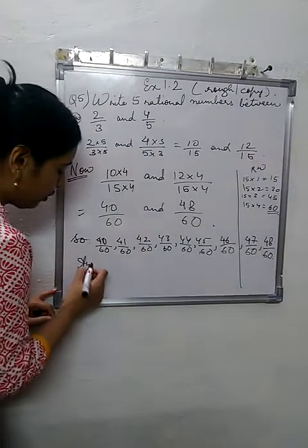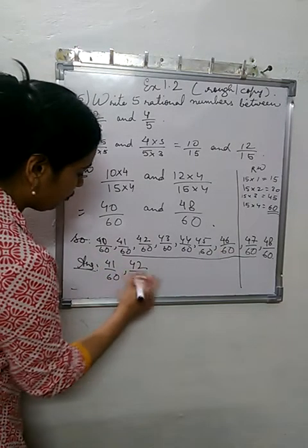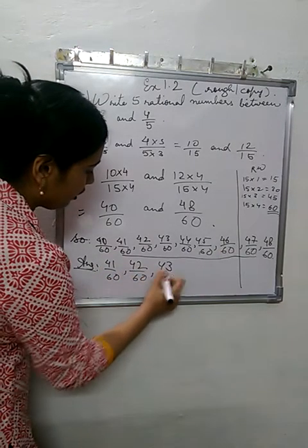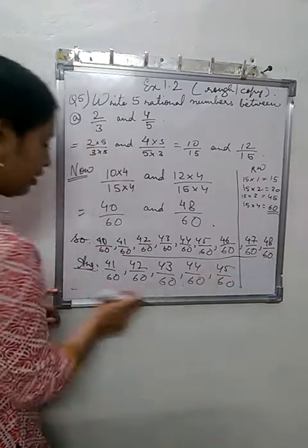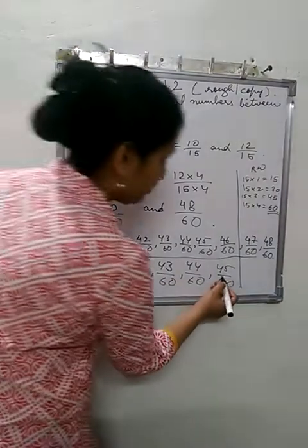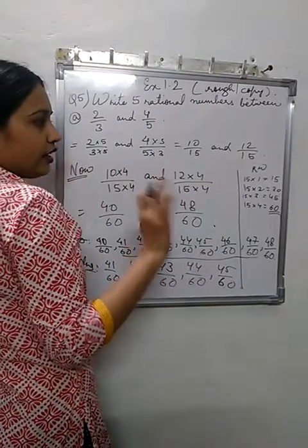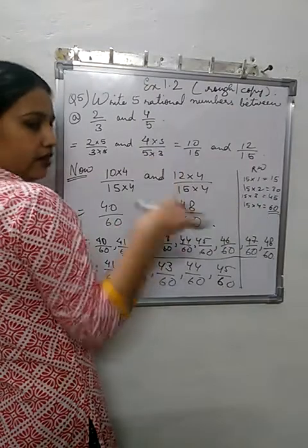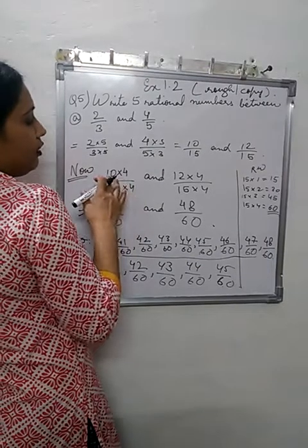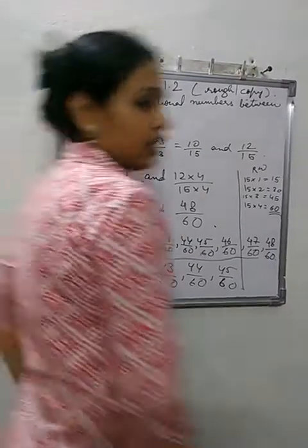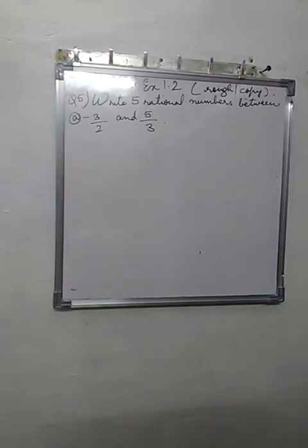Okay. Now, what should be your answer? Any 5 out of these. So, 41 by 60, 42 by 60, 43 by 60, 44 by 60, 45 by 60. So this is your answer. Instead, if you multiply here by 10, no problem. That is also correct. And this is another method, a simple method, to find out less rational numbers in between the two given rational numbers.